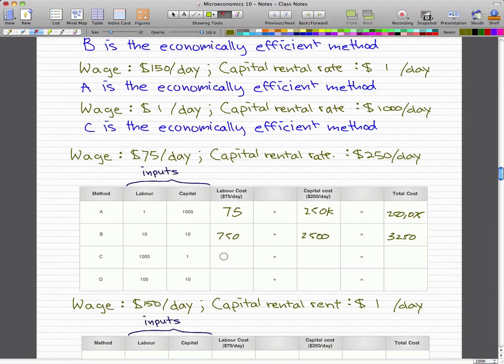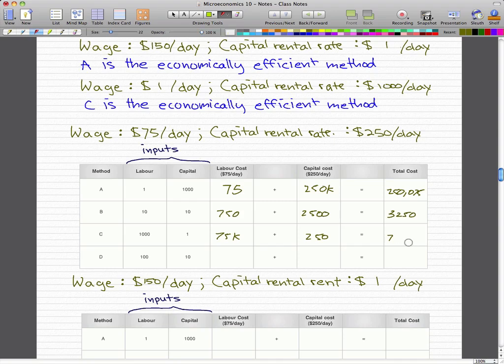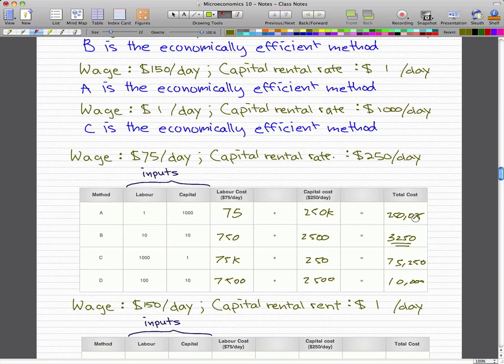Now, $75 times 1000 is $75,000 plus $250 times 1. So $75,000 and $250. $75 times 1000 equals $75,000 and $250 times 10 equals $2,500. So you can see that the lowest cost was $3,250, so this is the most economically efficient method because it provides us with the lowest cost.